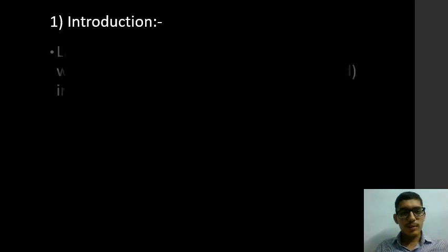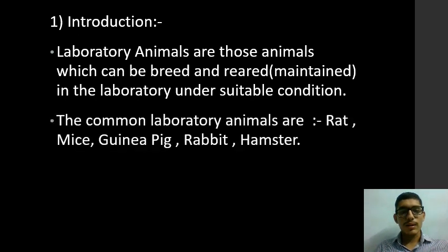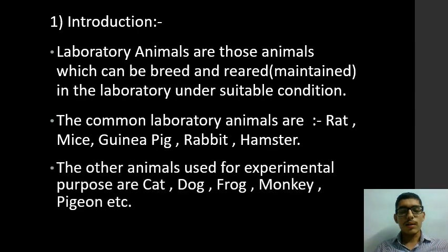Laboratory animals are those animals which can be bred and reared in the laboratory under suitable conditions — that is, animals which can bring their offspring into the world and which can be handled and maintained in the laboratory. Some common laboratory animals are rat, mice, guinea pig, rabbit, and hamster. Other animals used for experimental purposes are cat, dog, frog, monkey, pigeon, etc.